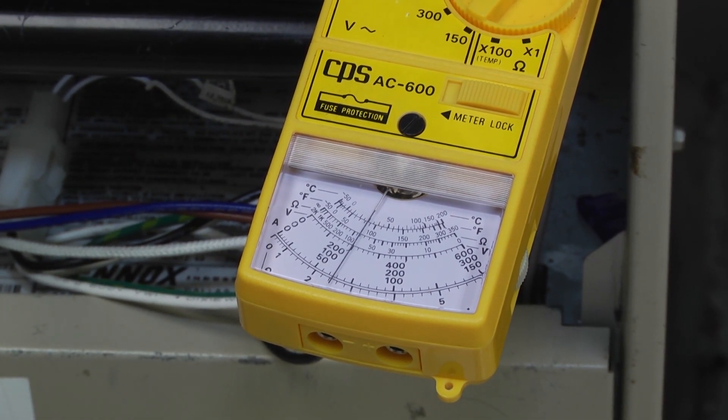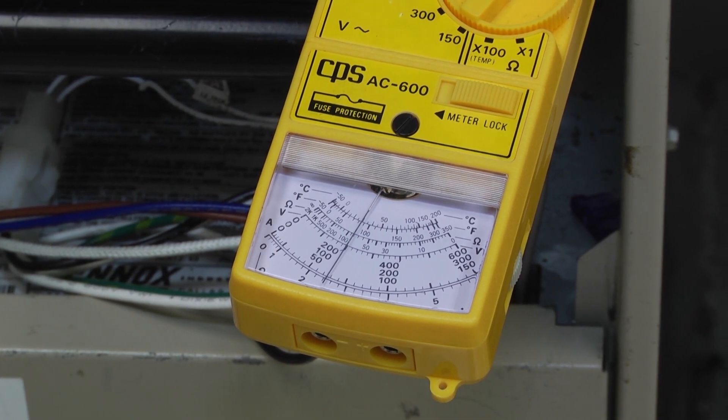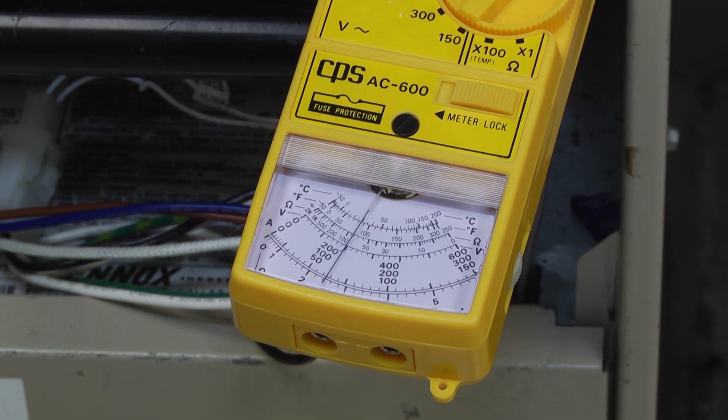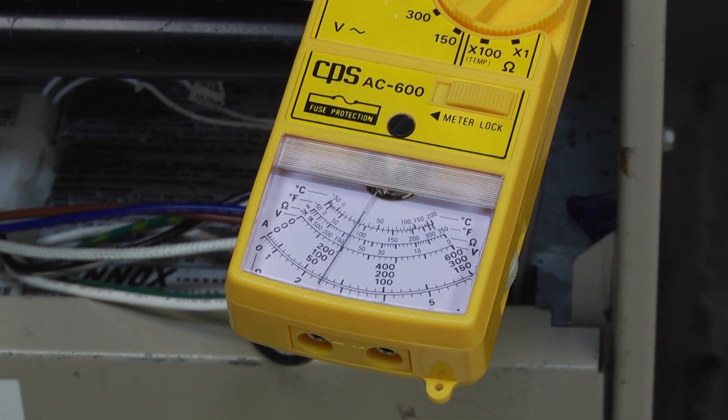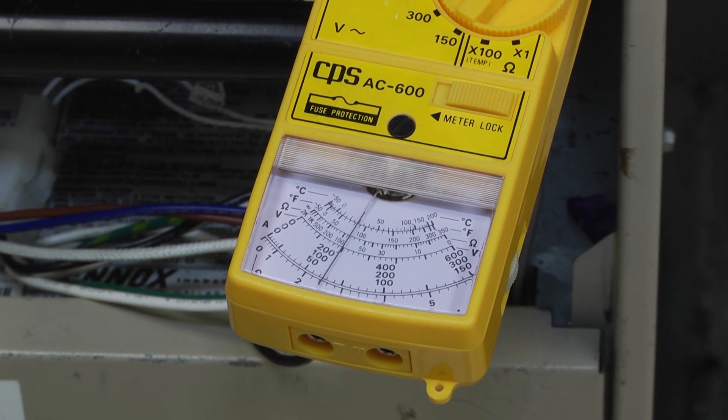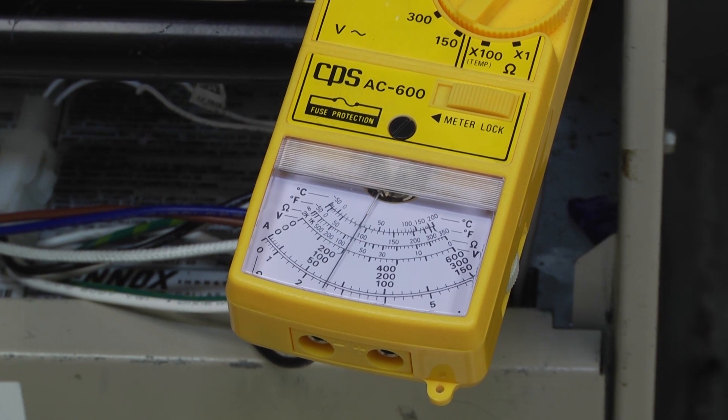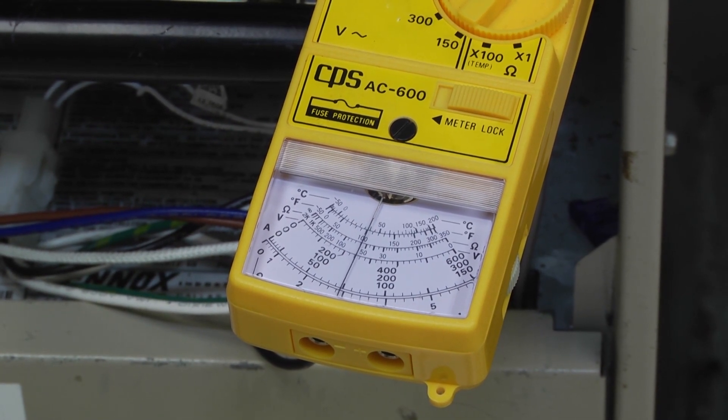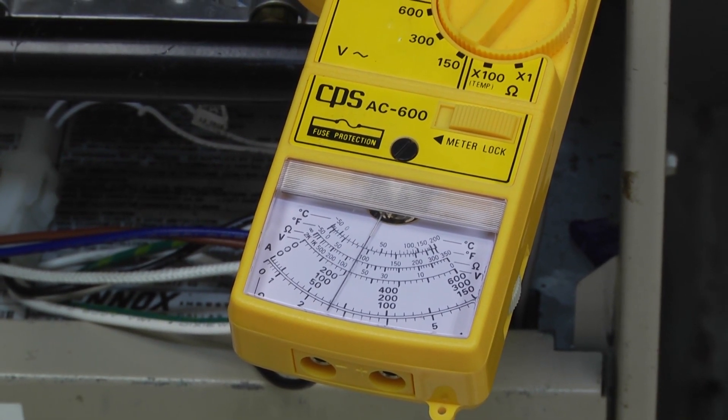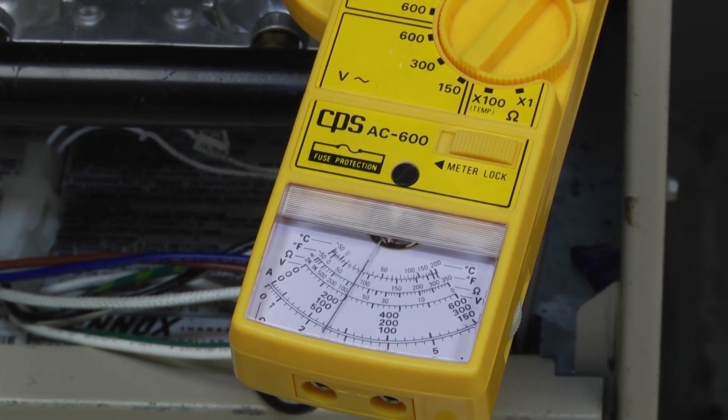So that just basically dispels the rumor that by decreasing the airflow or increasing the resistance to airflow, the amperage is going to increase. It's not. There is no resistance to airflow now. There is more resistance now, so the amp draw has dropped.